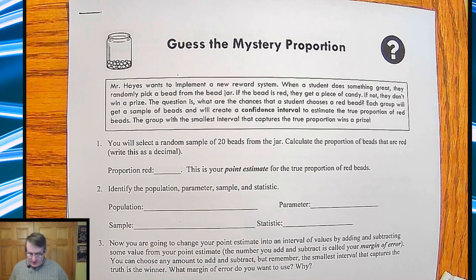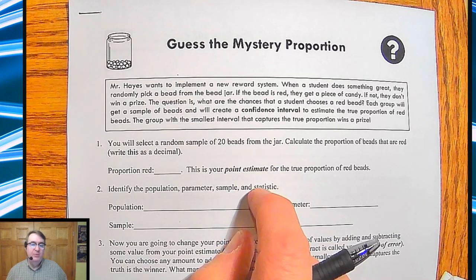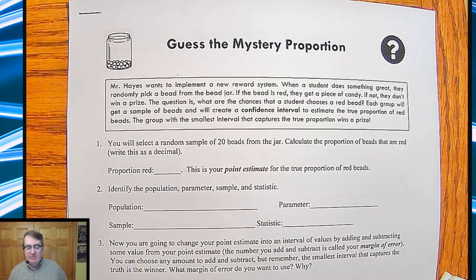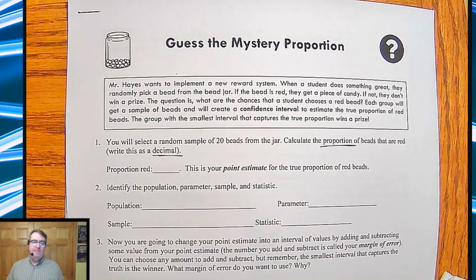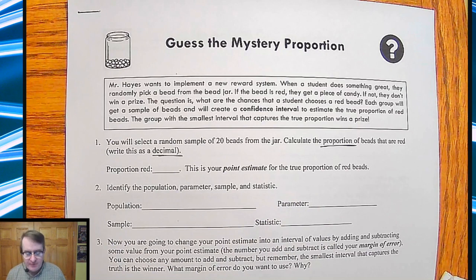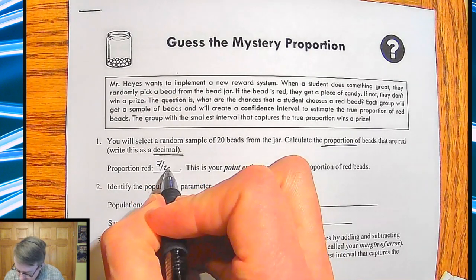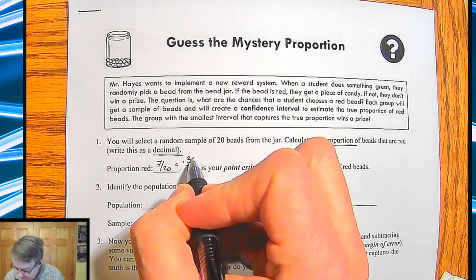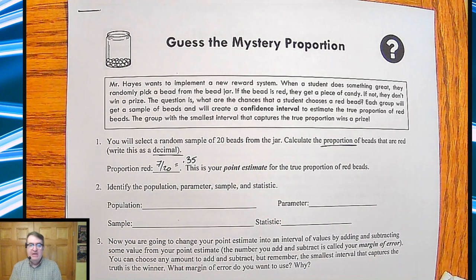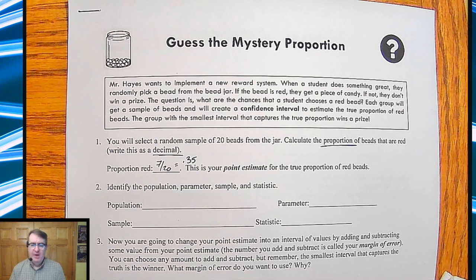So, you're going to go through and you're going to select a random sample of 20 beads from the jar, calculate the proportion of the beads that was red, and you're going to write this as a decimal. Now, remember, we're doing proportions, so that means you're going to do everything as decimals. For example, let's say we went through and we got 7 out of 20. That's equal to 0.35, 35%. That is your point estimate for the true proportion of red beads.